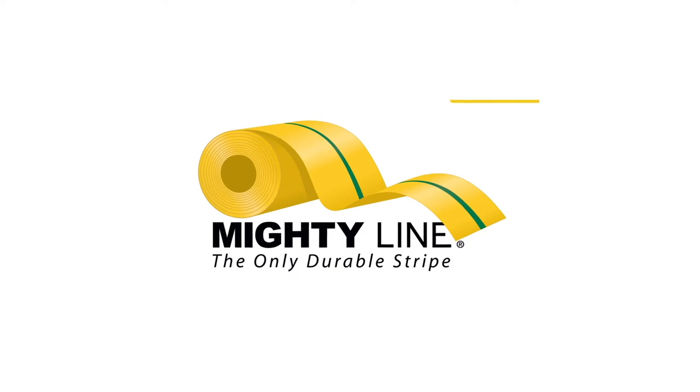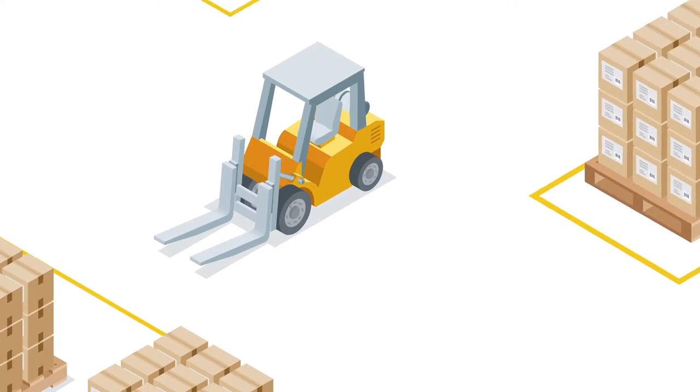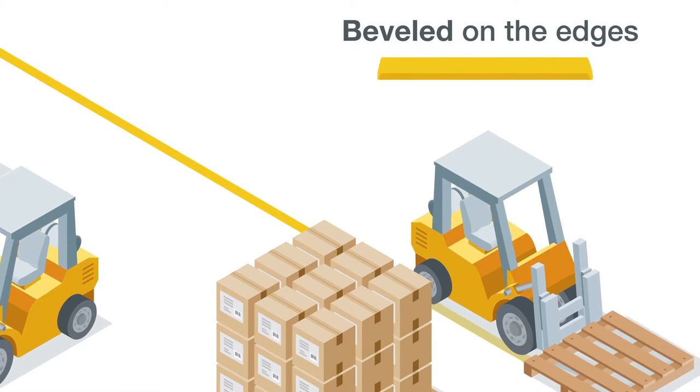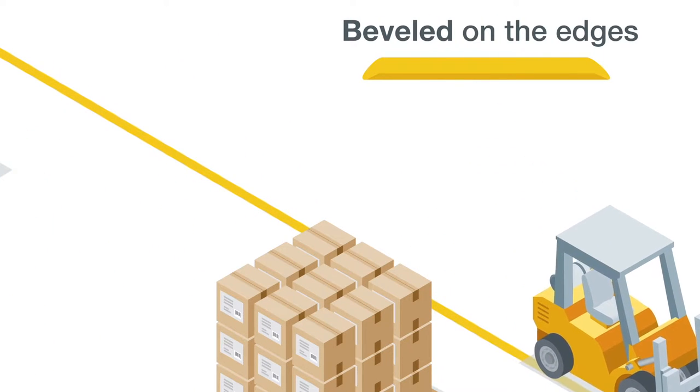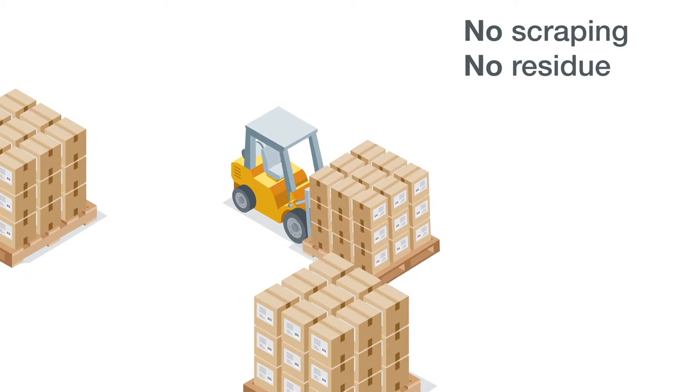The solution? MightyLine Tape. MightyLine Floor Tape is simply the most durable floor tape available. It's seven times thicker than most other floor tapes. It's beveled on the edges so it can handle an army of forklifts. And it comes up anytime with no scraping and no residue.